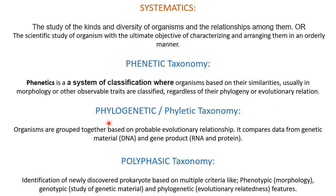Then comes phylogenetic taxonomy. In phylogenetic or phyletic taxonomy, organisms are grouped together based on their probable evolutionary relationship. Evolutionary studies are done to determine whether two organisms are related or not. It compares data from genetic material and gene products — specifically RNA and proteins — to trace the evolutionary relationship.